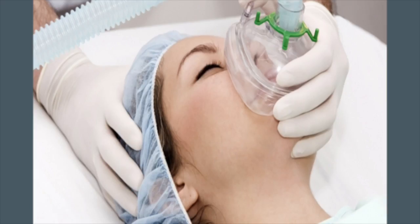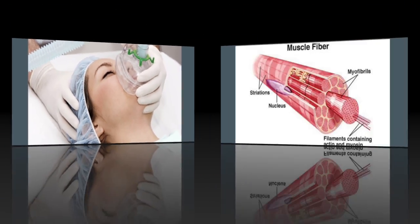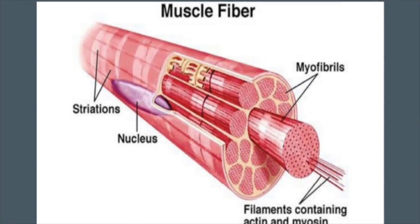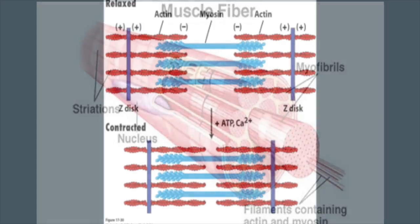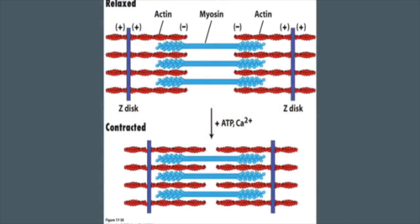Now let's go over the biological effects. Sodium thiopental works as a general anesthetic that causes unconsciousness. When someone is under anesthesia, a mask is required because respiratory muscles relax, meaning that the airways are not able to stay open to breathe. A muscle is made up of a large content of parallel muscle fibers. Each fiber is a very long cell with several nuclei. Each fiber has several myofibrils, and each myofibril has several smaller units called sarcomeres. The sarcomere is where muscle contraction occurs and is made up of two filaments: actin and myosin.